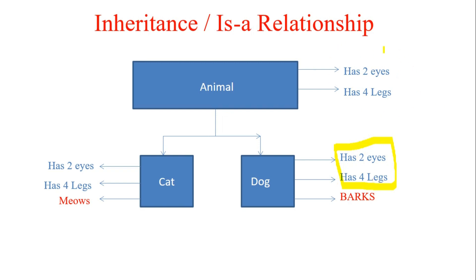You use the 'extends' keyword to inherit. Inheritance gives you the flexibility to reuse methods and fields of a parent class, and you can also add new methods and variables. This reduces your code and increases code reusability. This is called an 'is-a' relationship — Dog is an Animal, Cat is an Animal — that is why inheritance is known as an 'is-a' relationship between child and parent.